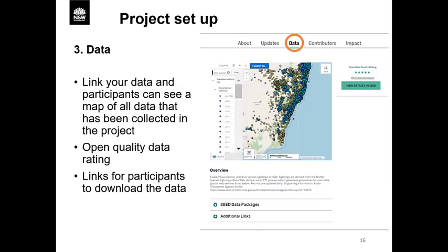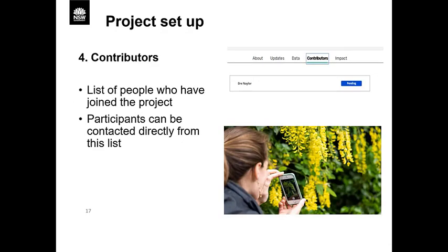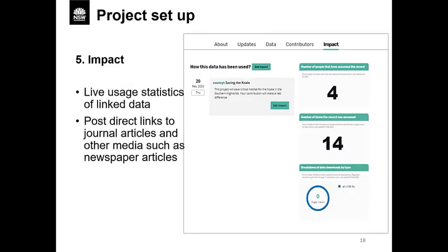Interoperability between the SIEG portal and NSW Bionet allows you to view data records through the SIEG map. People who have joined projects can be contacted directly through the app. The impact tab is a way for project organisers to show how participants' contributions can impact scientific research and environmental decision making. As a project organiser, you can also add direct links to journal articles and other items to show how the data is being used.